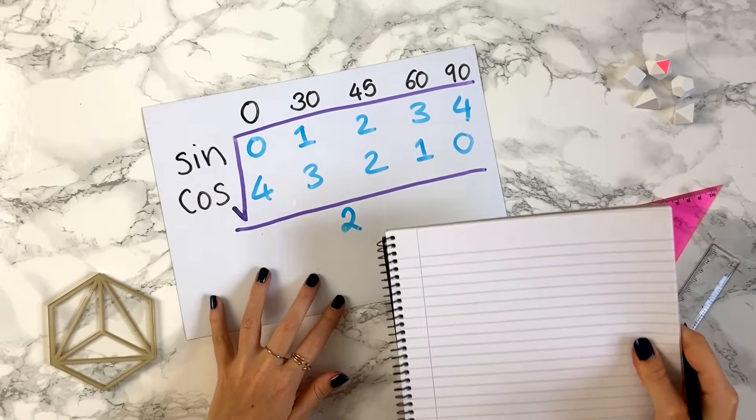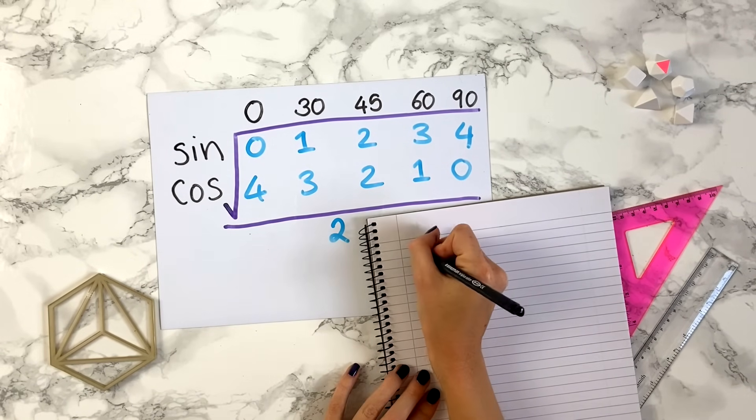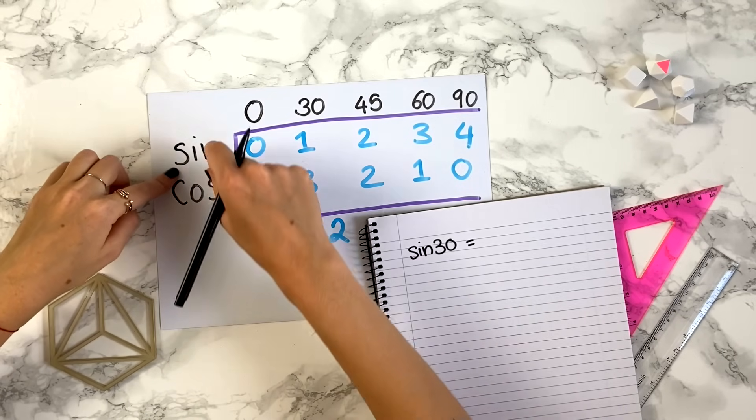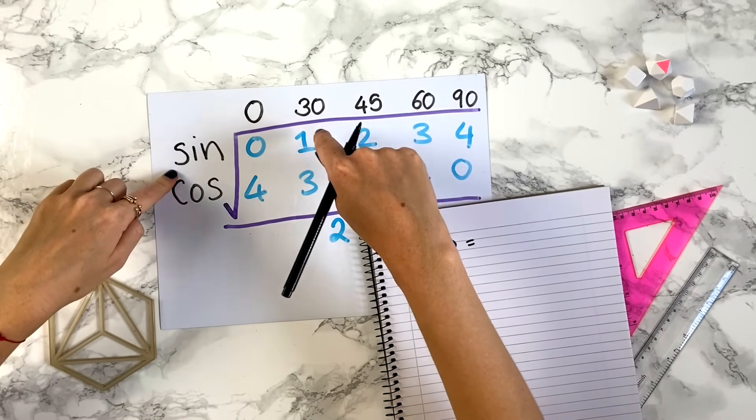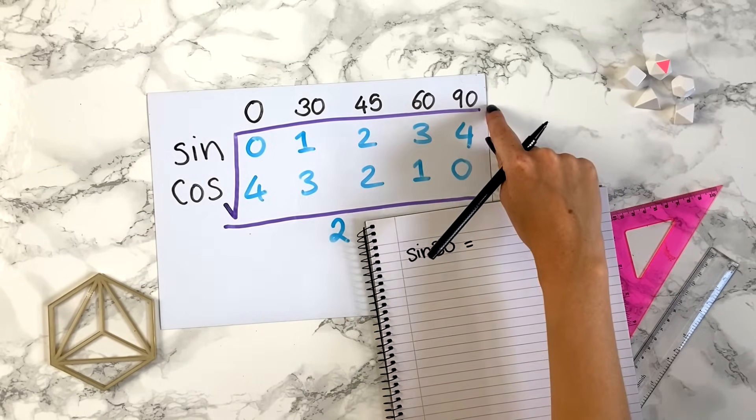Let me show you how you use this. Say in a question you need to know the value of sine 30. So what you do is look here. We've got sine, so we want this top row, and you want 30. So you're going to look at this value here.